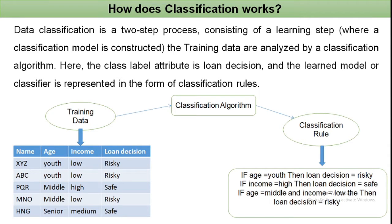Data classification is a two-step process. The first step is the learning step, where the classification model is constructed. The training data are analyzed by the classification algorithm. Here the class-labeled attribute is a loan decision, and the learned model or classifier is represented in the form of classification rules.